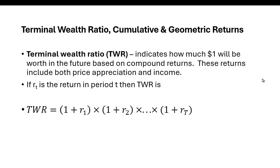So if you calculate the terminal wealth ratio to be, let's say, 1.4 and you had originally invested 1 million dollars, you would now have 1.4 million dollars.